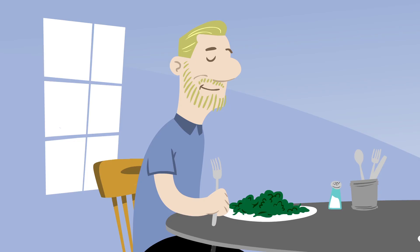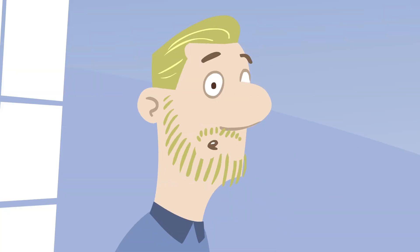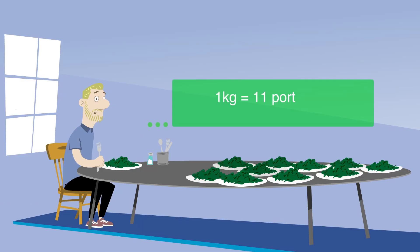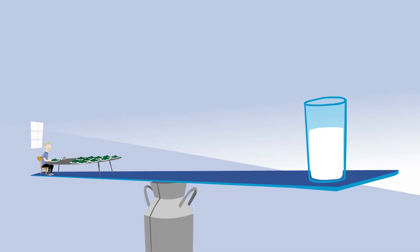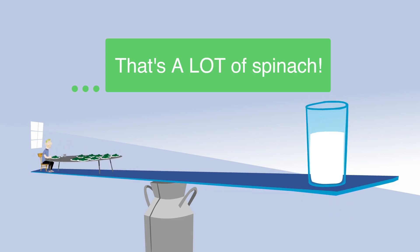For this reason, you'd need to eat a whopping one kilogram of spinach, or 11 portions, to get the same amount of absorbable calcium as you'd get from just one glass of milk. That's a lot of spinach.